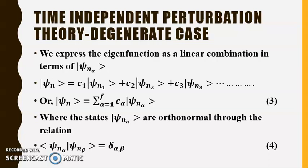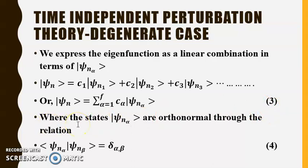We express the eigenfunction as a linear combination in terms of |ψ_nα⟩. That is, we write |ψ_n⟩ = c_1|ψ_n1⟩ + c_2|ψ_n2⟩ + c_3|ψ_n3⟩ and so on. In summation form we can write |ψ_n⟩ = Σ_{α=1}^{f} c_α |ψ_nα⟩, which is equation 3.